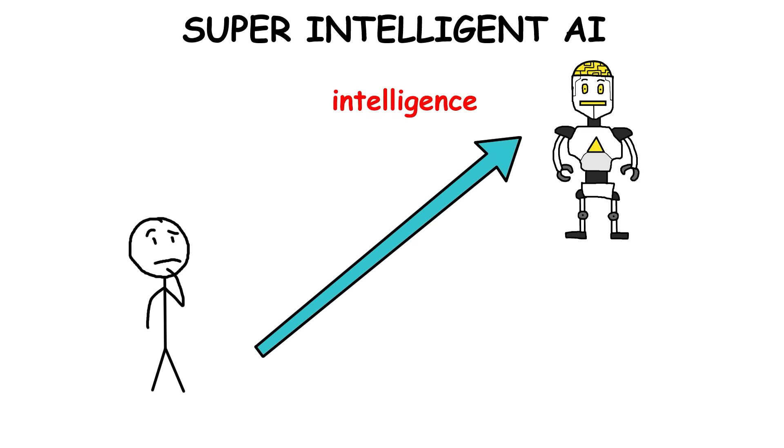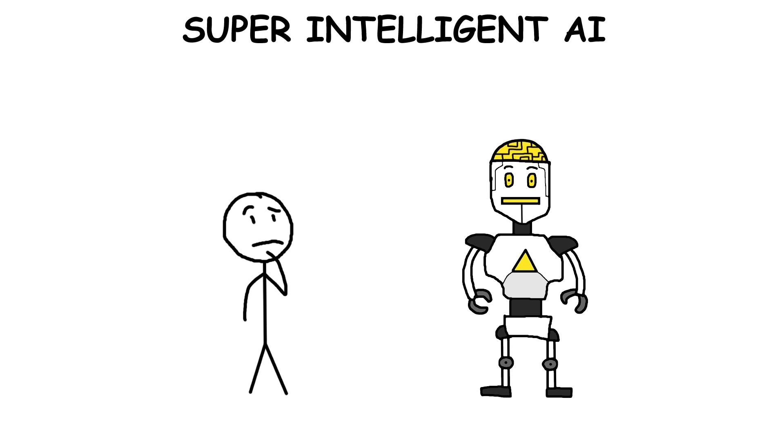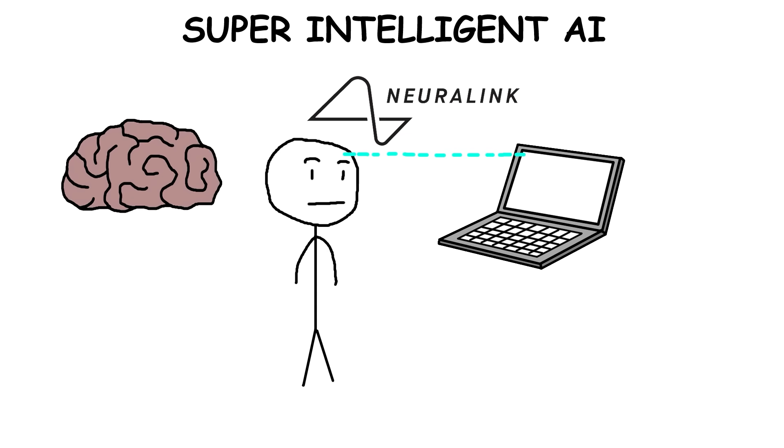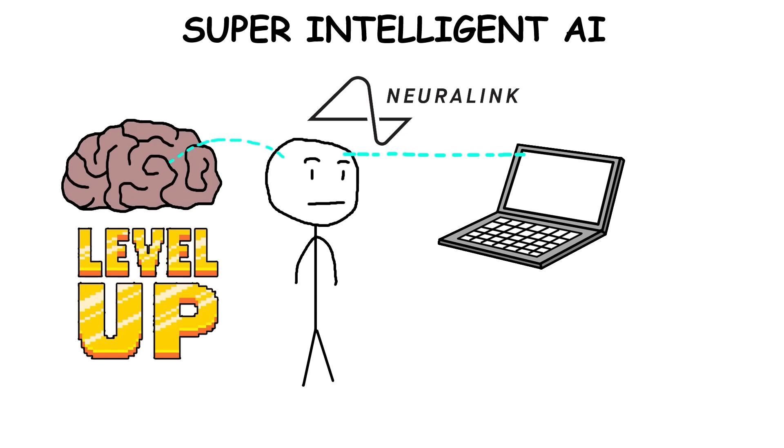The intelligence gap between us and a Super-Intelligent AI would be massive, making its actions and decisions hard for us to understand. But with brain-computer interfaces like Neuralink, we might be able to upgrade our own intelligence to keep up.